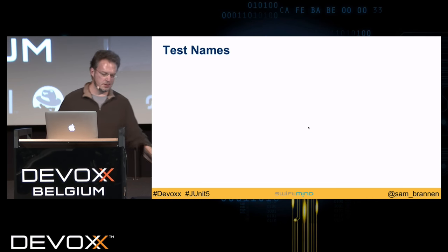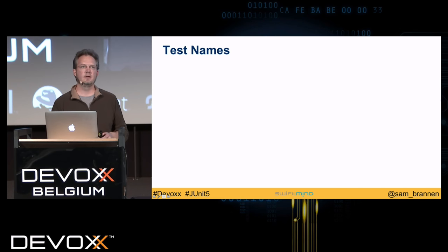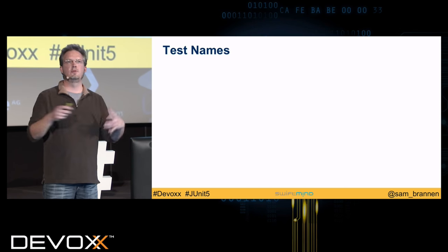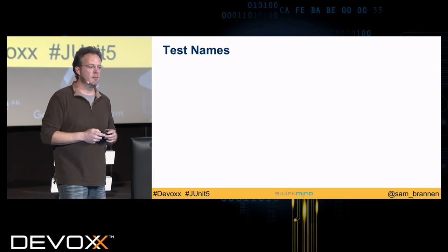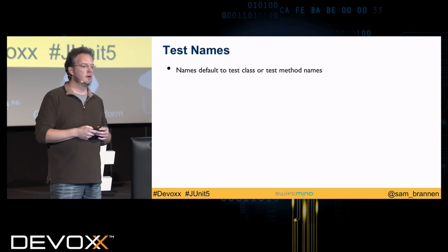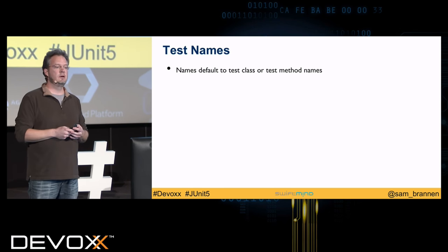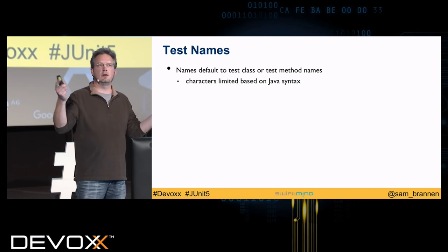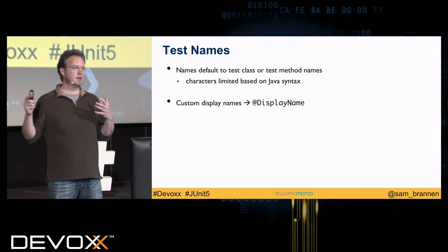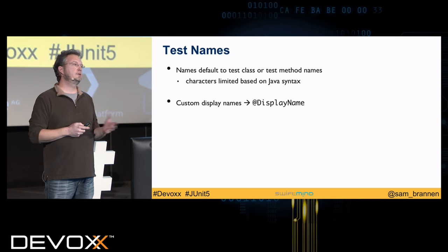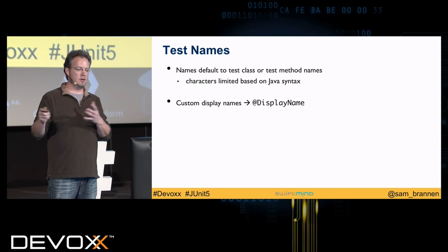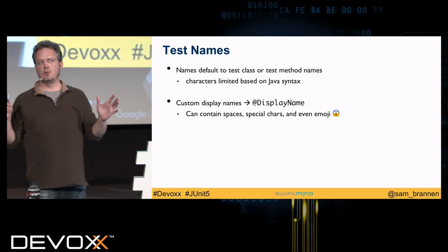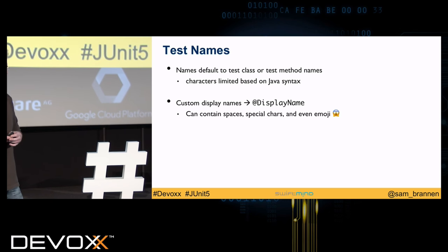On test names: who has ever wanted a test name other than just the method name? In Spock with Groovy that's already possible, but with JUnit 4 typically not. By default names default to the test class and method names, with characters limited by Java syntax. In JUnit Jupiter, the answer is @DisplayName — you can provide custom display names containing spaces, special characters, and even emoji. That usually gets the best applause.